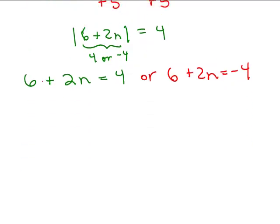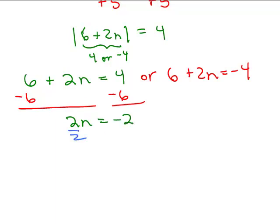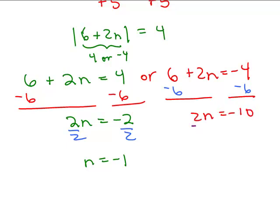Let's solve both. For the first equation, subtract 6 from both sides to get 2n equals negative 2, then divide both sides by 2 to get n equals negative 1. For the second equation, subtract 6 from both sides to get 2n equals negative 10, then divide both sides by 2 to get n equals negative 5.